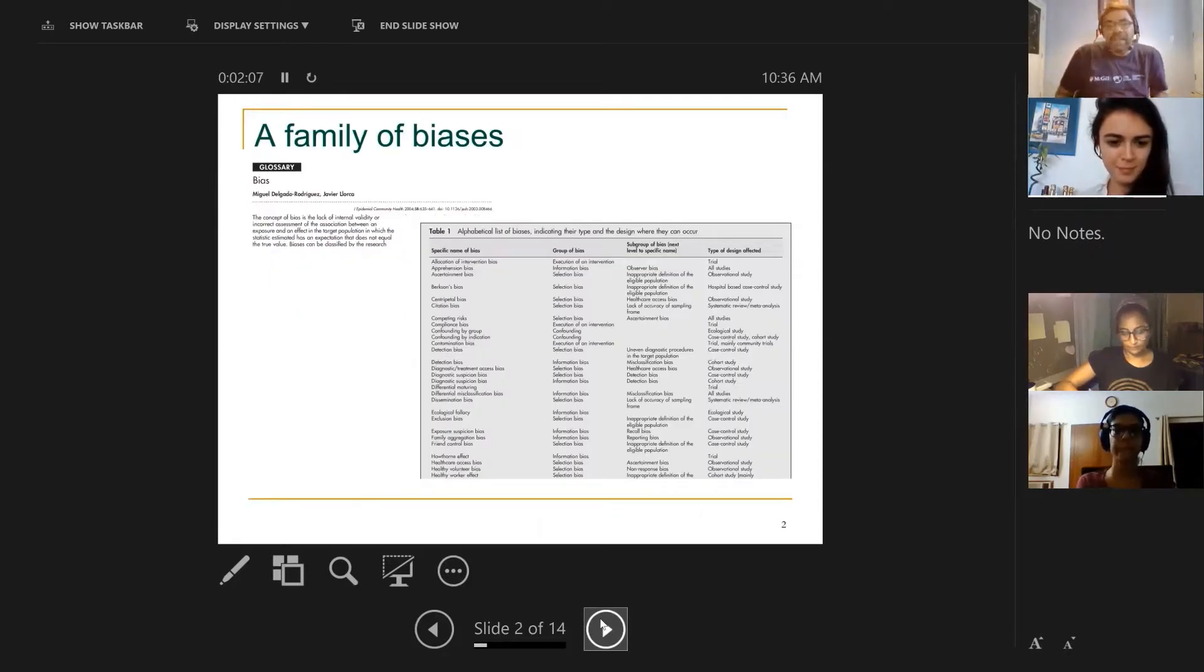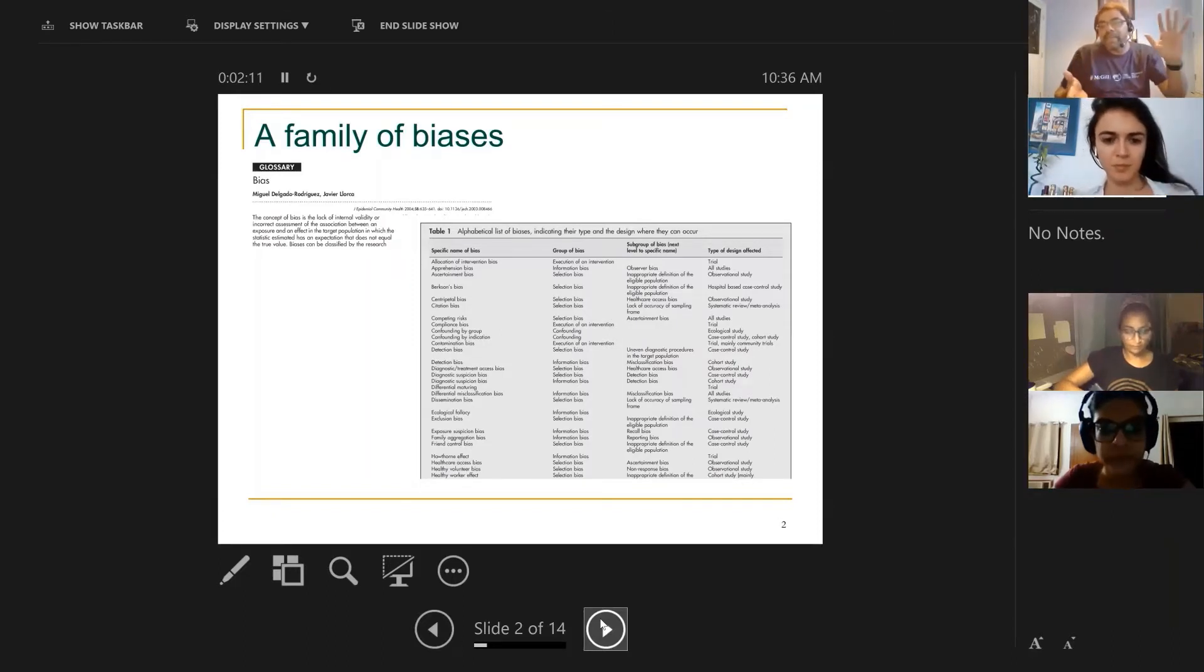There's a family of biases. Believe it or not, there are people out there who've written pages on catalogs of bias: hundreds of different biases—ecological fallacy, Berkson's bias, healthy worker bias, Hawthorne effect. You name it, we have a name for that bias.